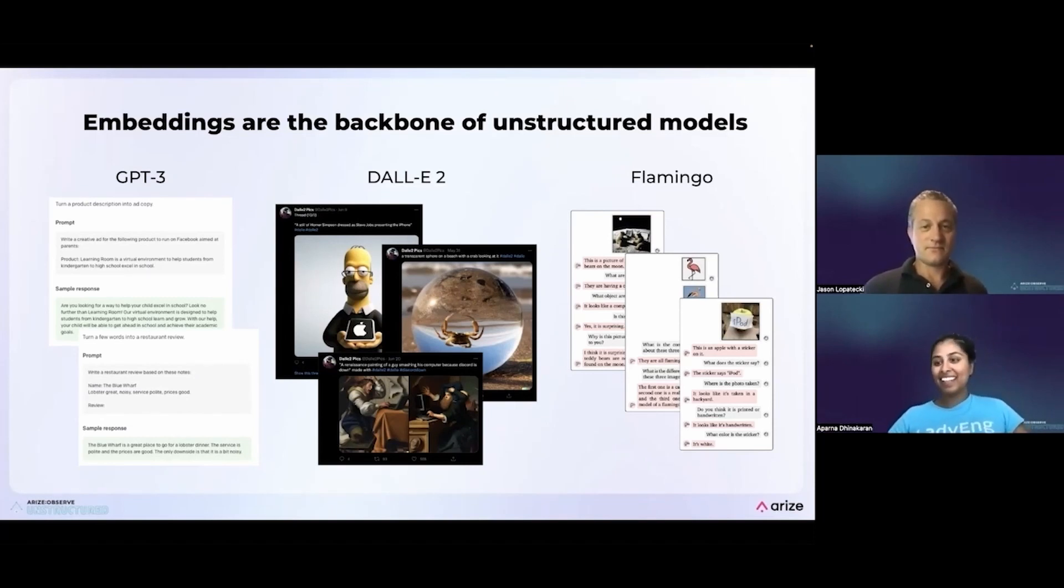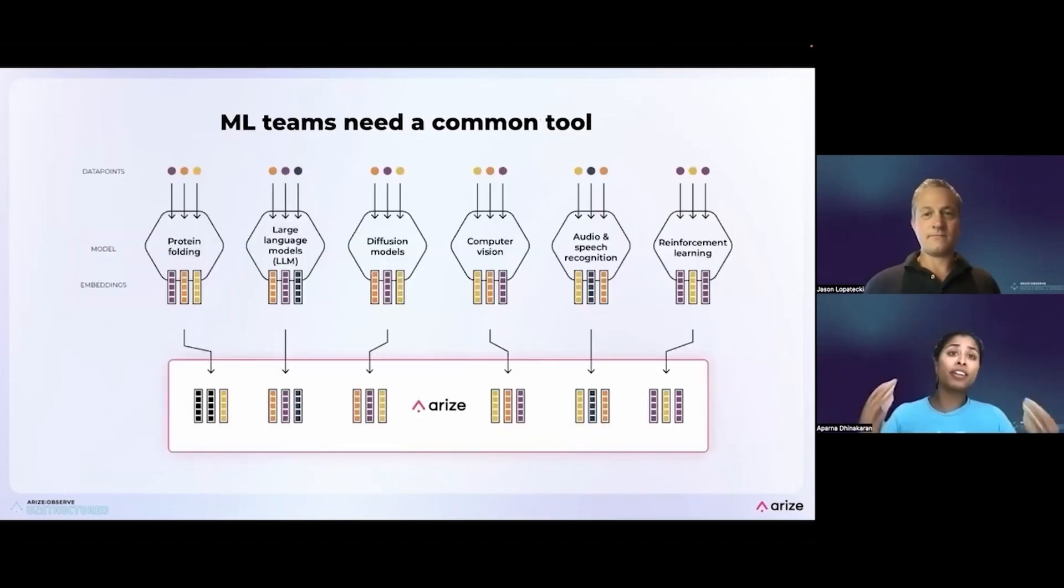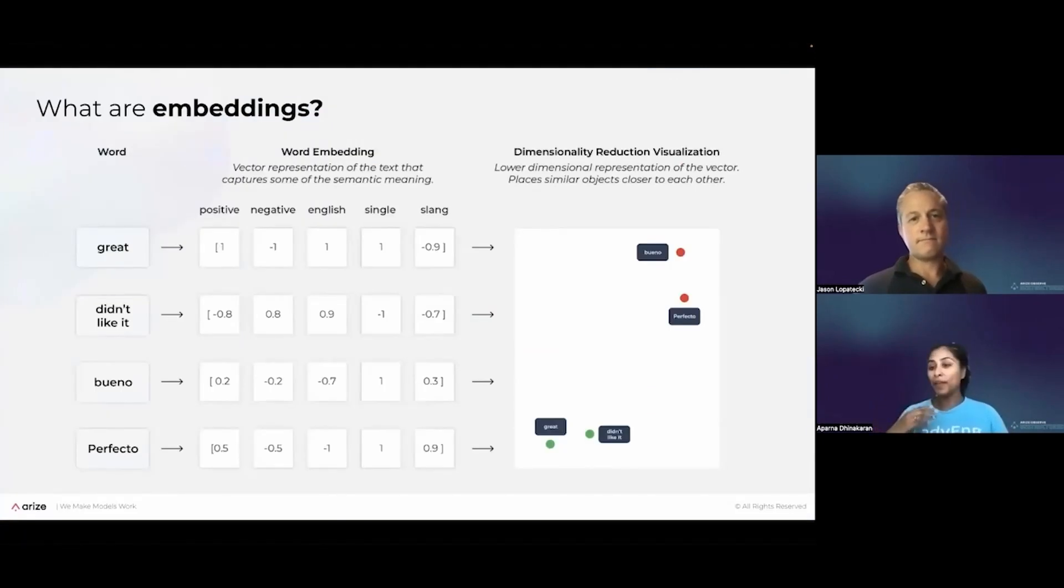Embeddings are everywhere. If you take anything away from this talk that Jason and I are part of, I hope it's that embeddings are everywhere. They're in GPT-3. They're behind Dolly 2, released by OpenAI. And they're really the backbone behind a lot of the deep learning models and complex models deployed out there. And because they're everywhere, they're really the perfect interface to use to troubleshoot these types of models. And we'll explain a little bit today about our new product launch that we've just recently released to the public that supports unstructured data and embeddings.